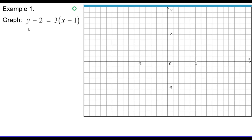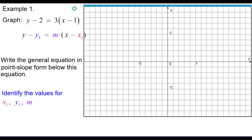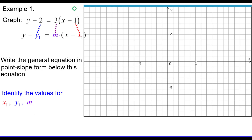Let's look at some examples. Graph y minus 2 equals 3 times the quantity x minus 1. Notice it is not in standard form or slope-intercept form — it is in point-slope form. Comparing to y minus y sub 1 equals m times the quantity x minus x sub 1, we can identify: y sub 1 is positive 2, m is positive 3, and x sub 1 is positive 1.